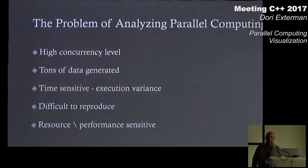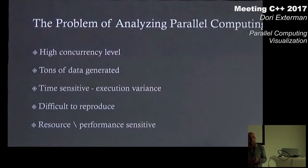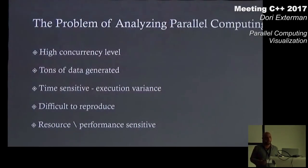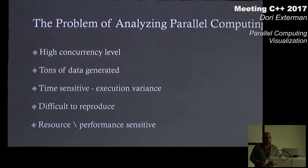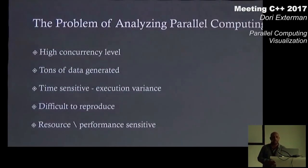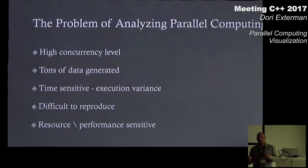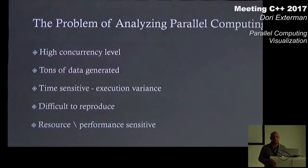When we speak about parallel computing — and that's something most of us are moving towards, especially in the world of C++, where we have multi-CPUs everywhere — things are moving towards parallel processing, parallel threads, etc. Drawing information out of this data is even more important, because in parallel computing we have high concurrency and tons of data of things running in parallel. If we used to have sequential information, with concurrent execution things are running in parallel, making it much more difficult to understand.